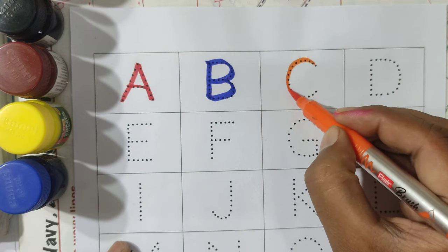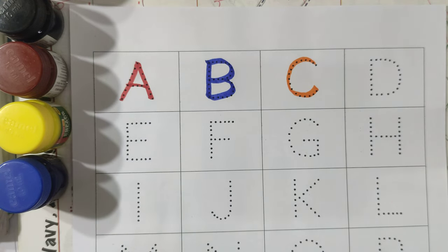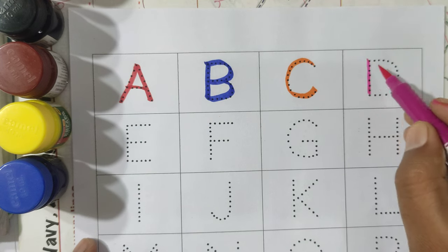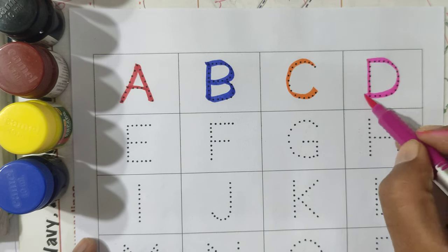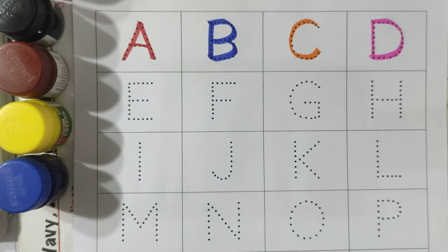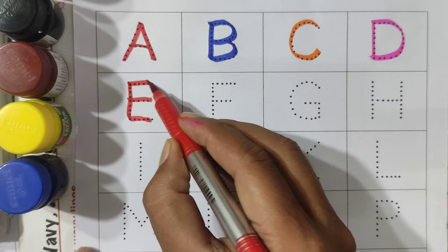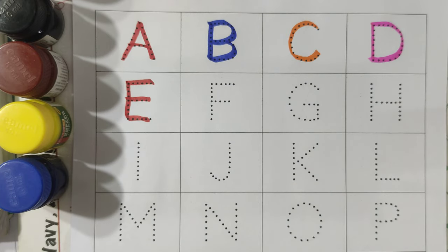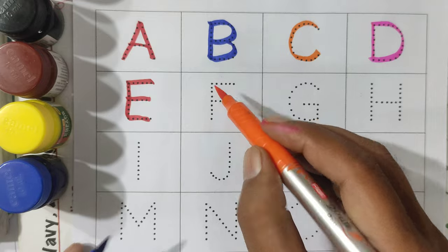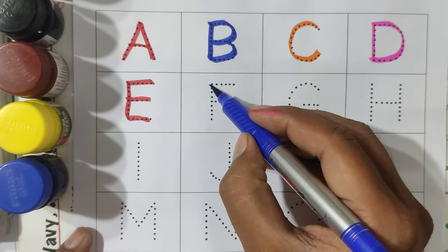C, C for Cat. D, D for Dog. D for Dog. E, E for Elephant. E for Elephant. F, F.